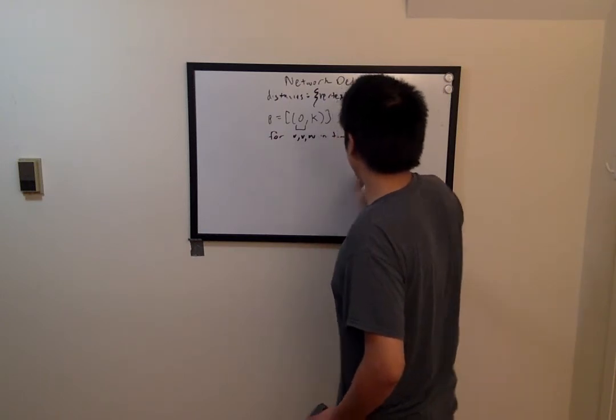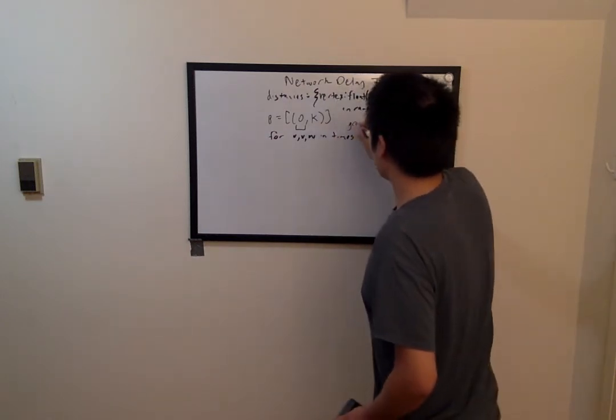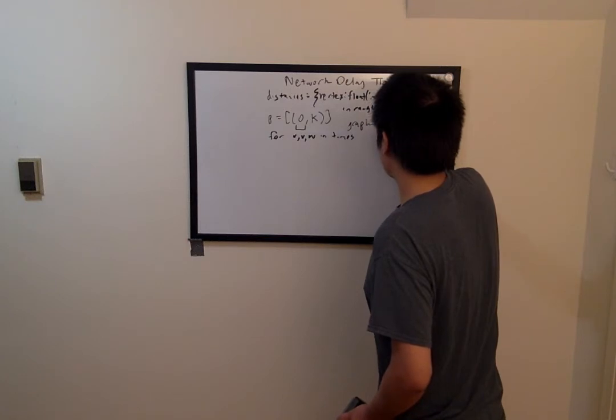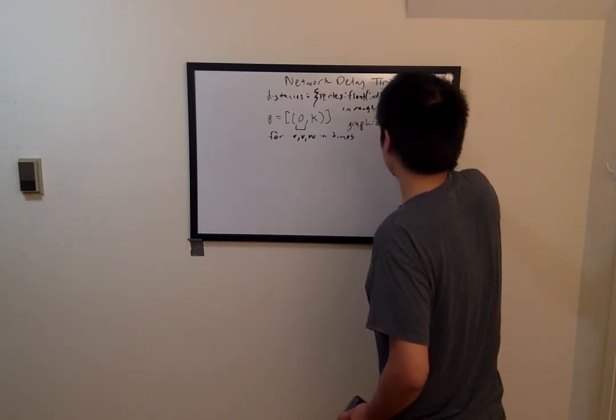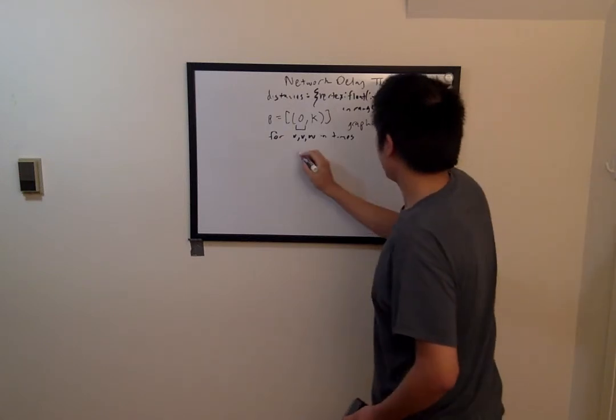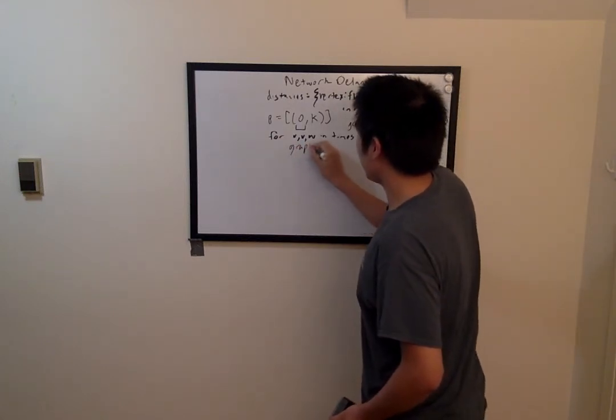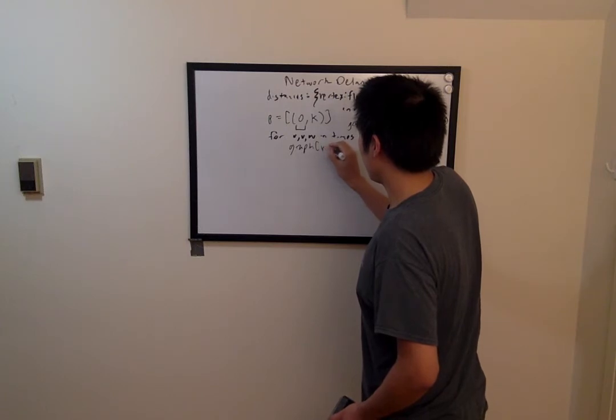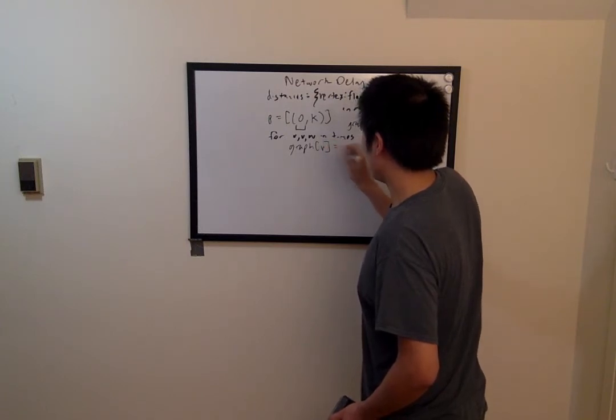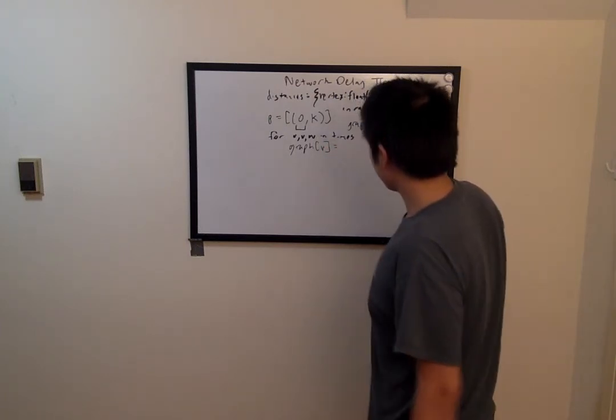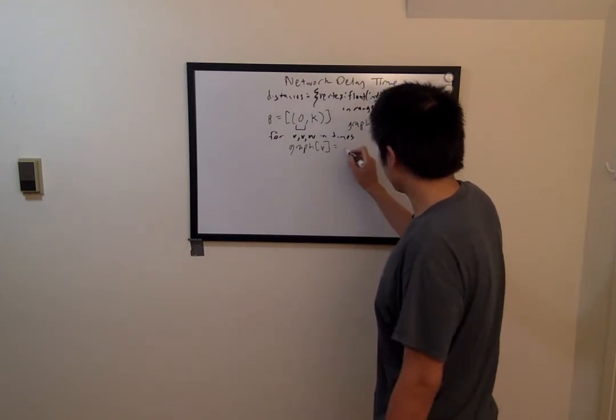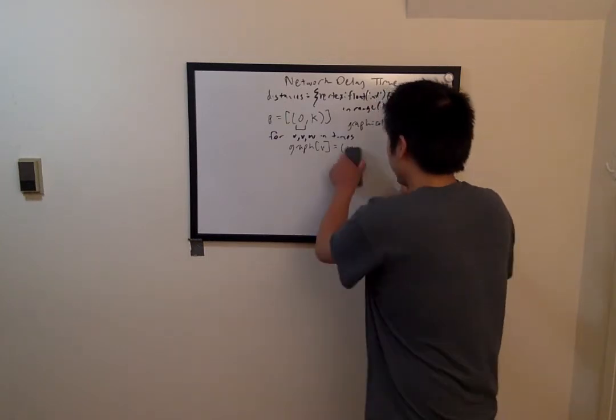So graph equals collections.defaultdict of list. And we'll do graph of u equals vw.